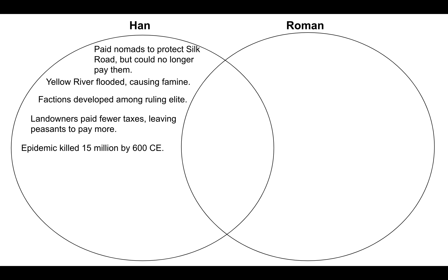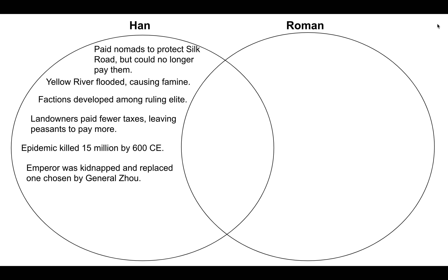There was an epidemic that killed 15 million Chinese people by the year 600 CE. 15 million — that's a lot. That's going to cause serious weakness within the Han Dynasty empire.